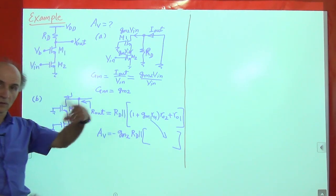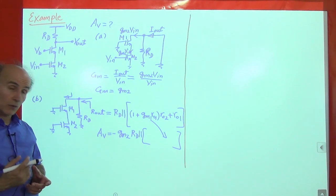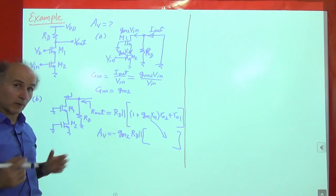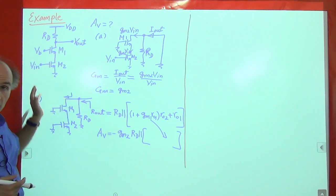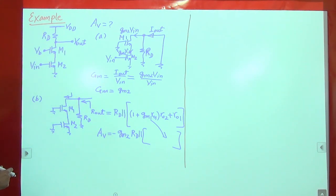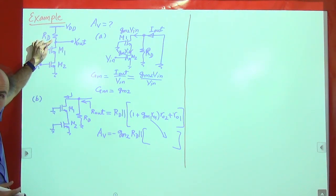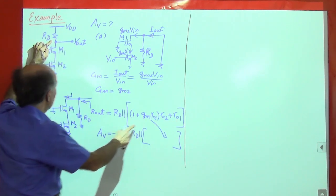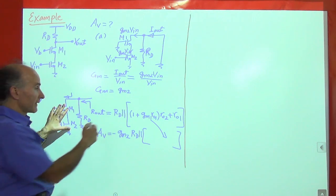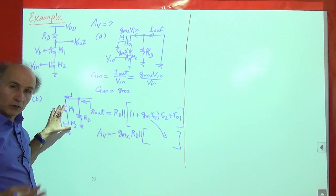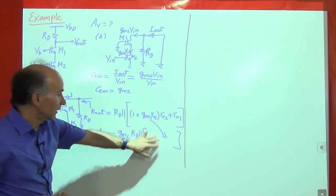The voltage gain is minus GM2 times R_out, which is RD in parallel with the cascode resistance. The problem is that placing the physical resistor RD in parallel considerably lowers the output resistance. We had a pretty high resistance from the cascode, but the physical resistor pulls it down substantially. So using a resistor as the load is not ideal — we should use a current source instead.